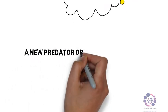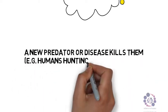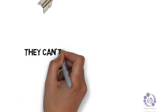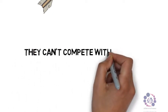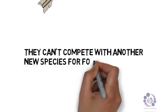A new predator or disease kills them, for example hunting. They might not be able to compete with another new species for their food. This is an example of a grey squirrel outcompeting the red squirrel in the UK.